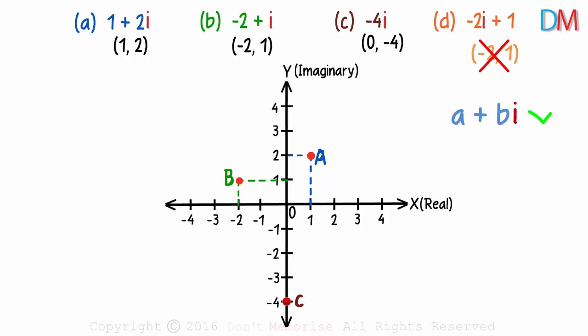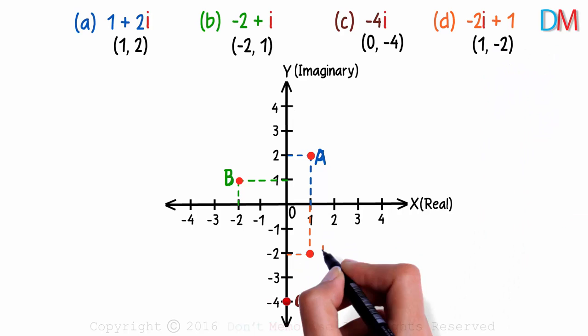A complex number is always written in the form a plus bi and not bi plus a. So this is actually 1 minus 2i, which makes the ordered pair 1 comma negative 2. And it can be plotted here in the fourth quadrant.